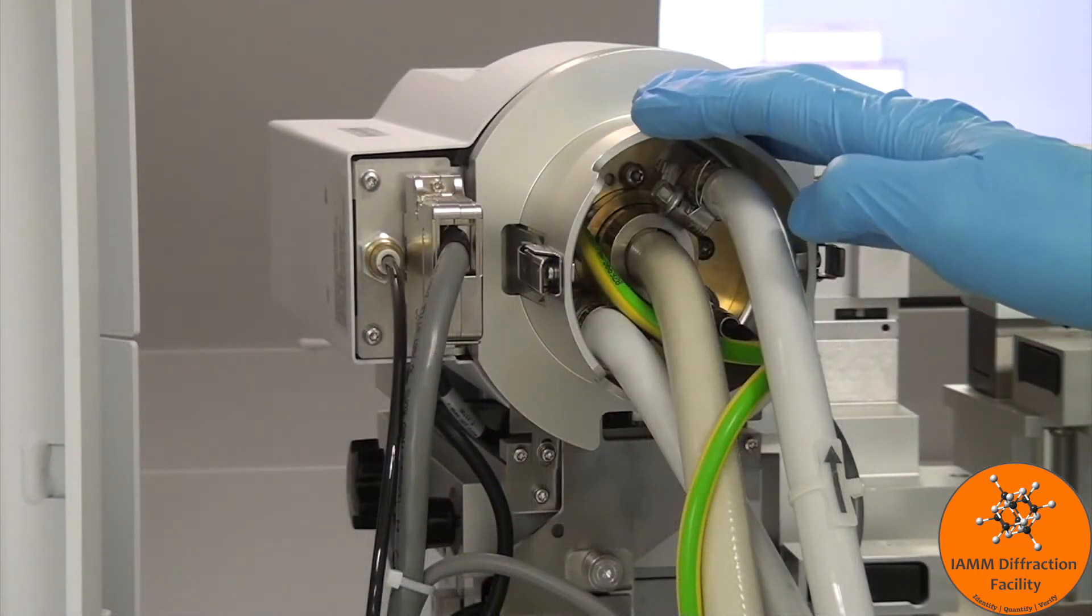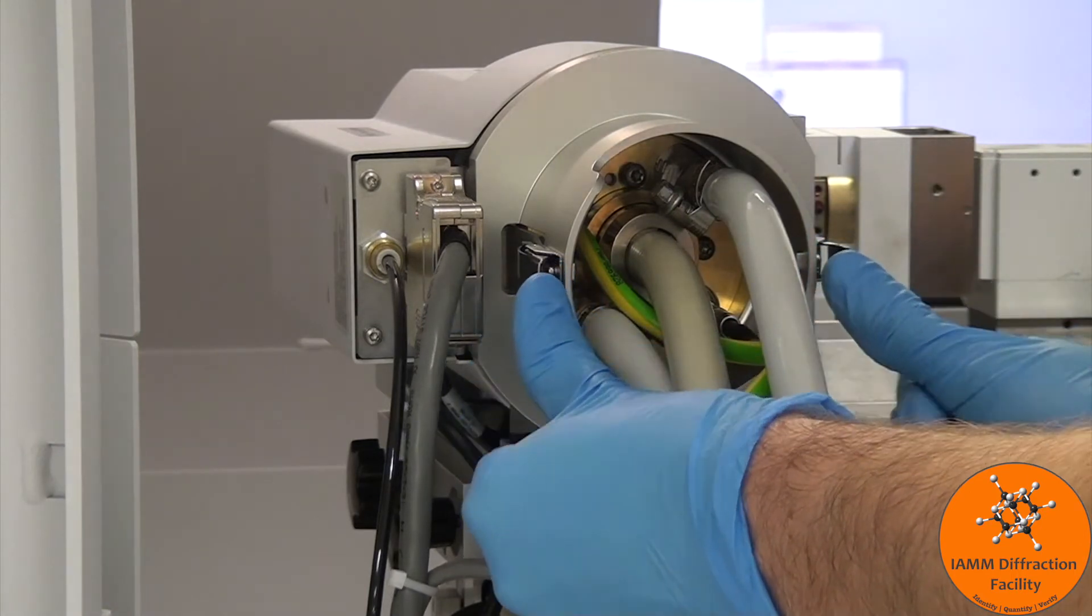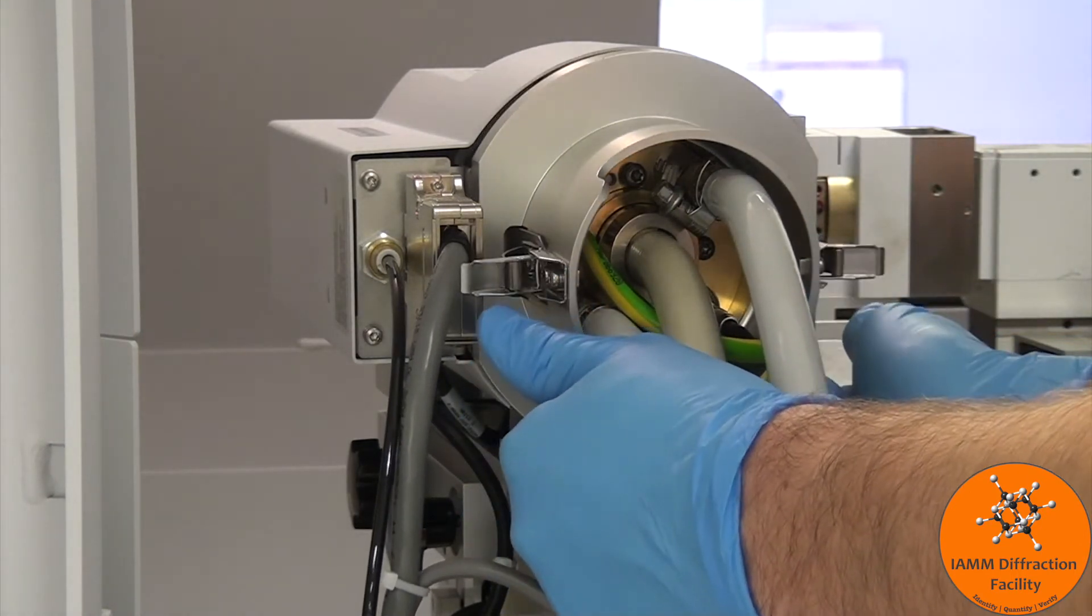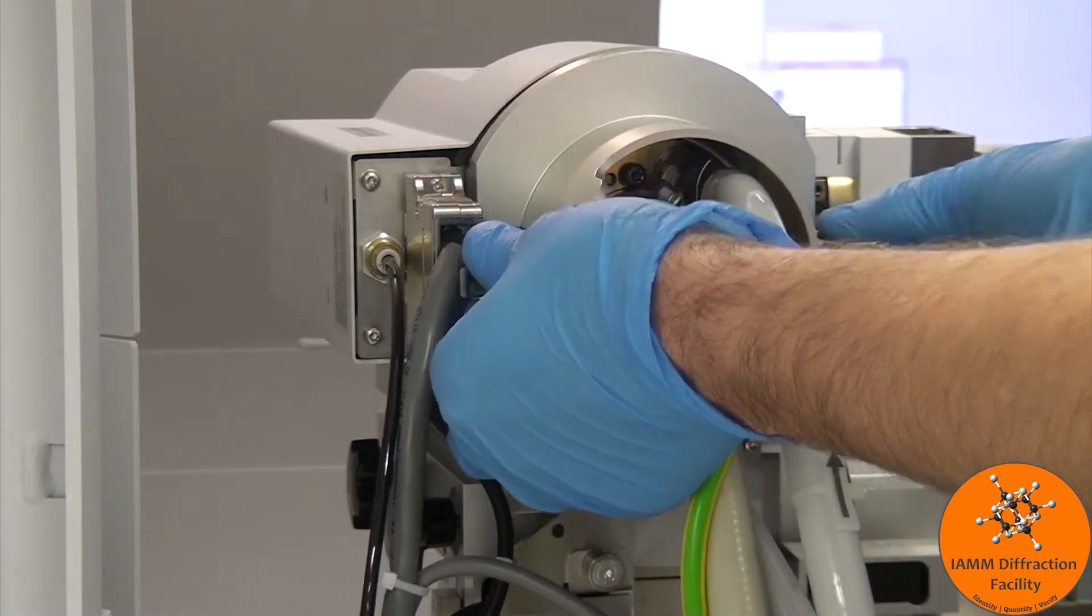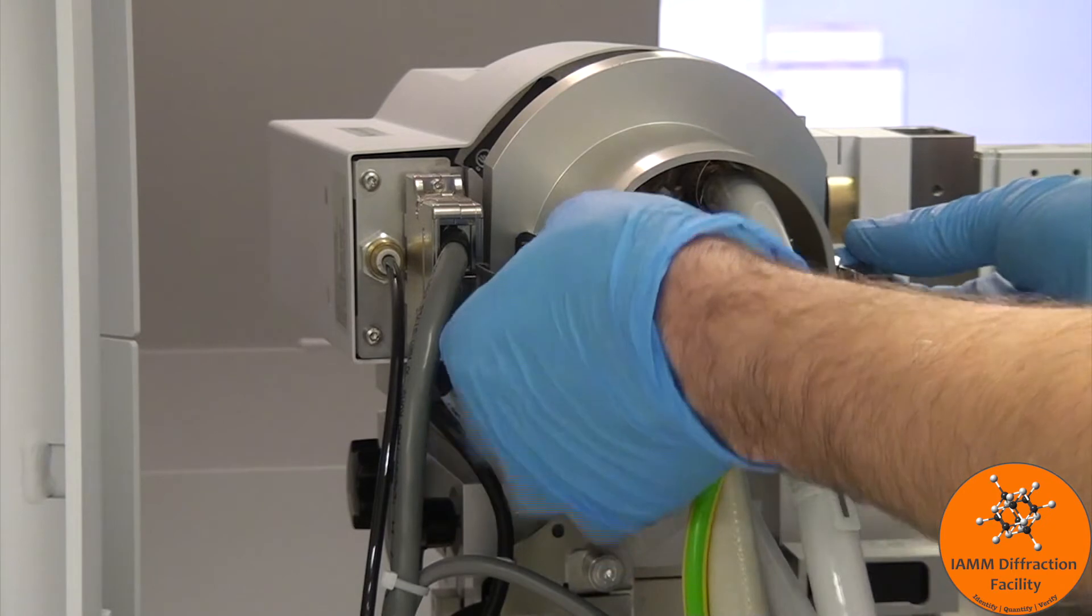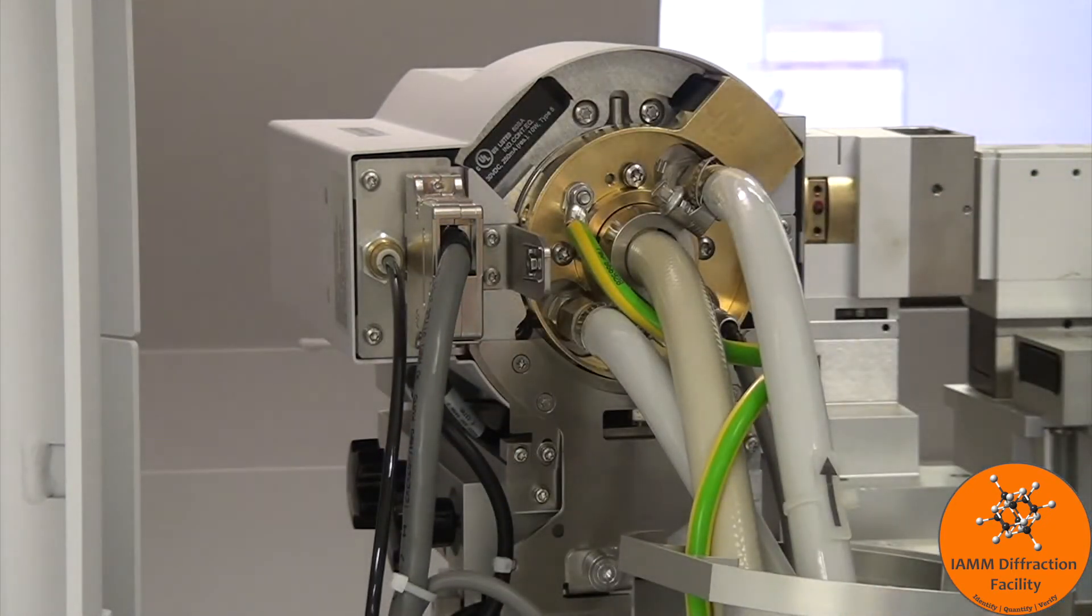Here we see the back of the x-ray tube so we want to push these two clips forward to loosen the collar. We have to work these hooks off where they latch onto. Pull it back to let it rest down there on its own.